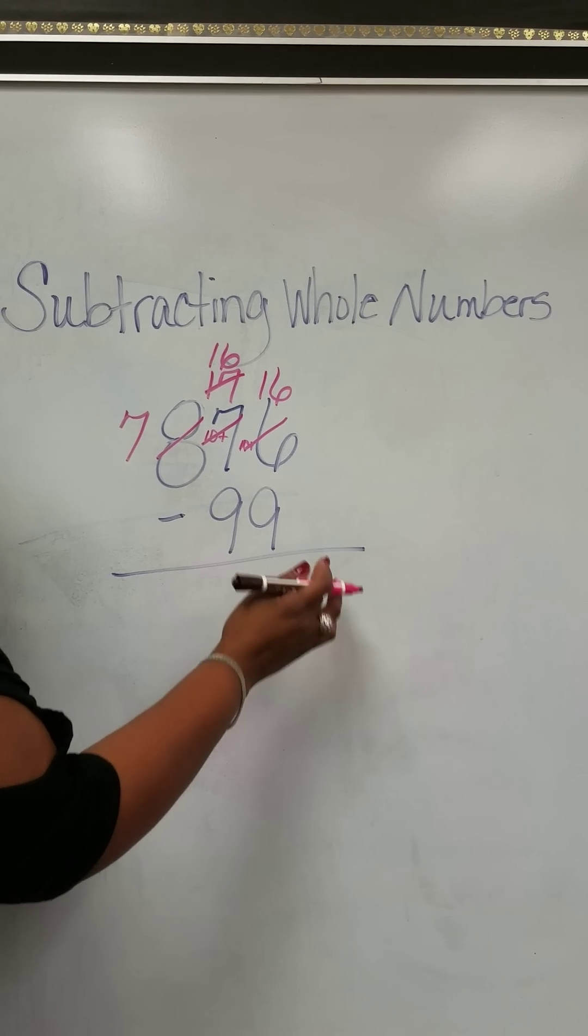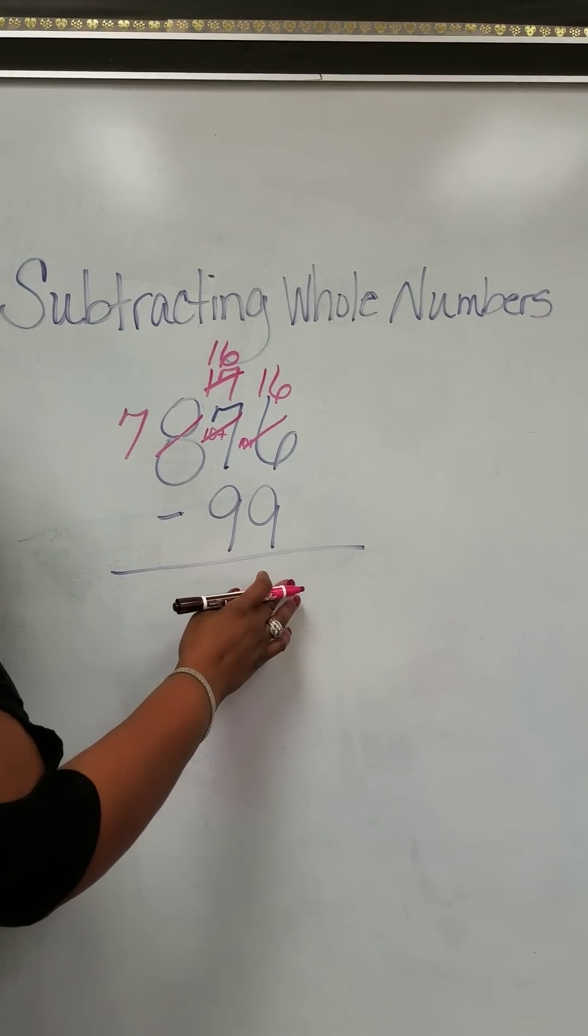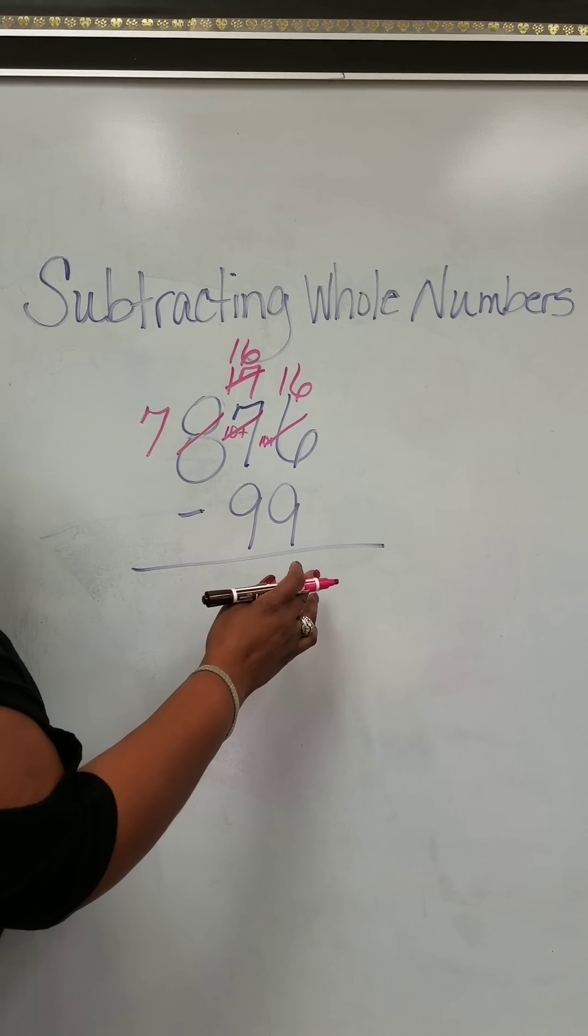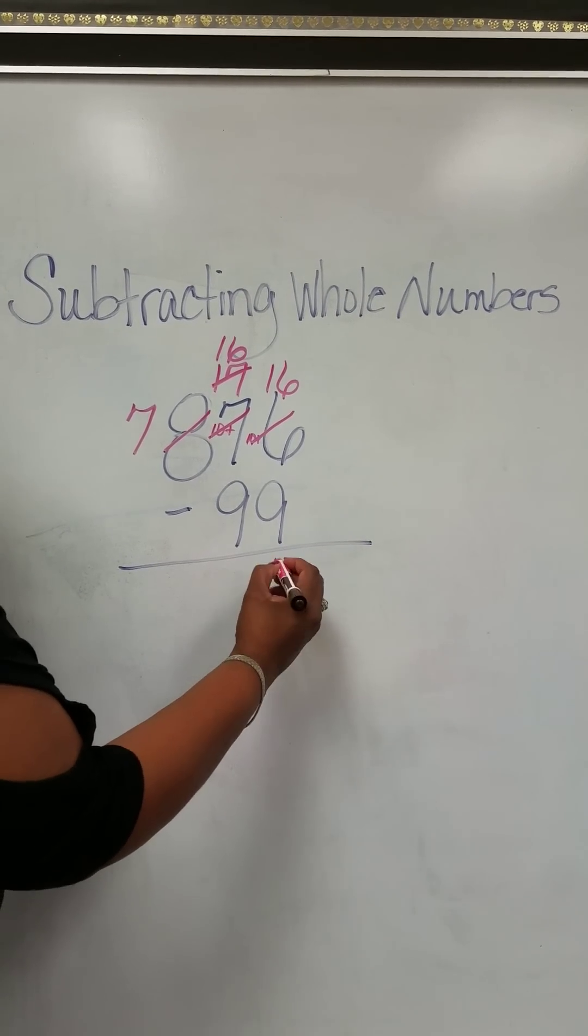So we have 16 minus 9. You always count up. You start with 10: 10, 11, 12, 13, 14, 15, 16, which is 7.